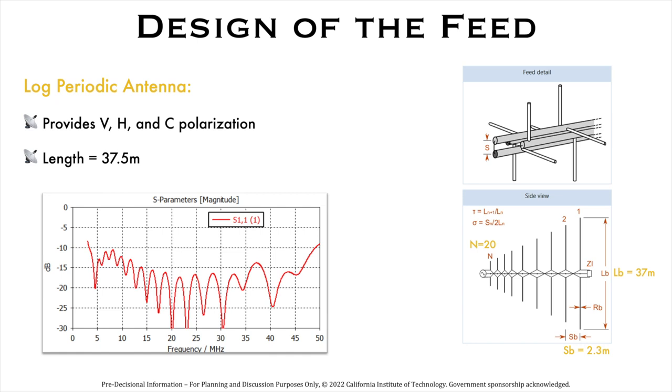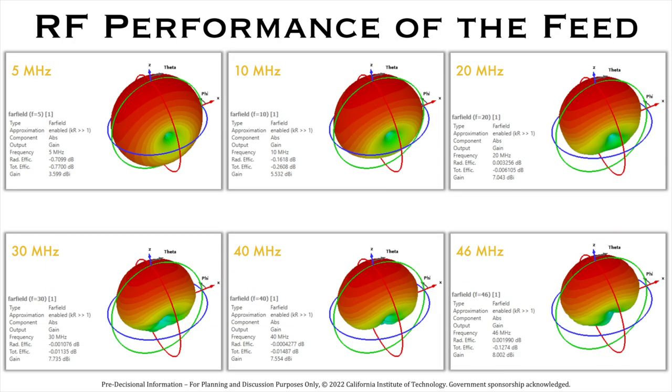We are using a log periodic antenna for the receiver feed system. Here we show the design of our feed and the gain patterns at different frequencies.